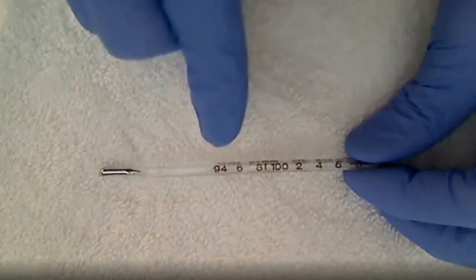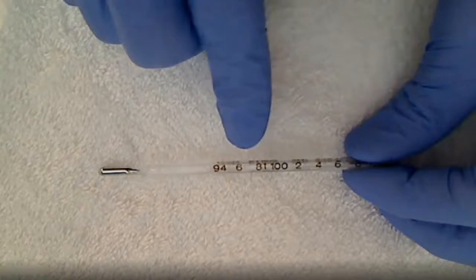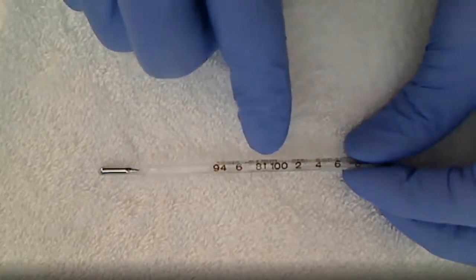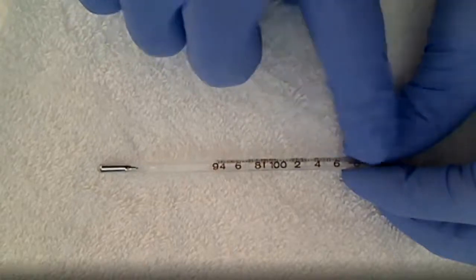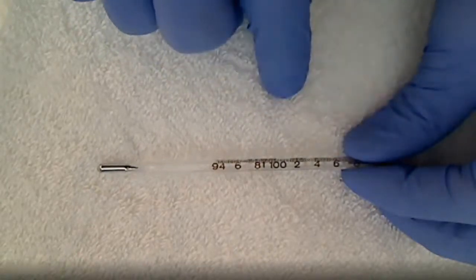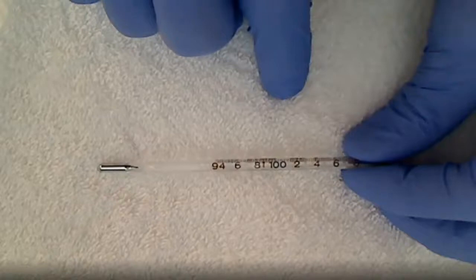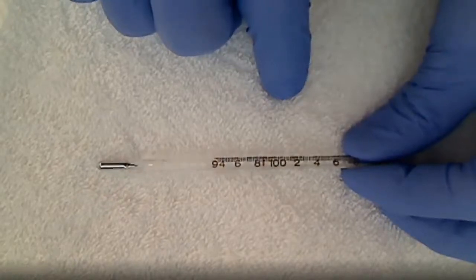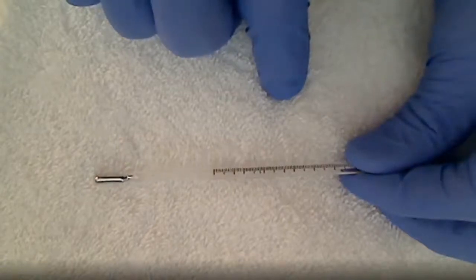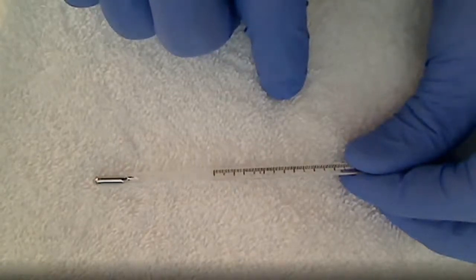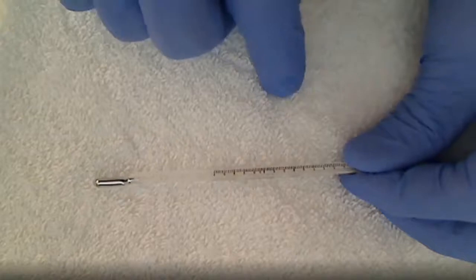Where it says 94, 6, 8, there's the arrow, 100, 2, 4, 6, and 8's up here under my thumb. You see all the little bitty marks right there? See them? It's tiny. That's why we can't put all the numbers on here.